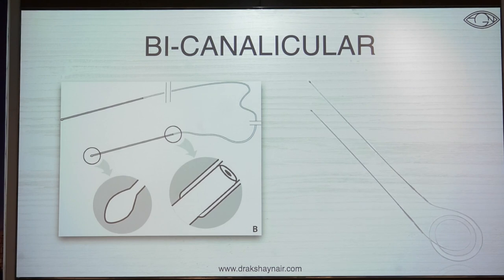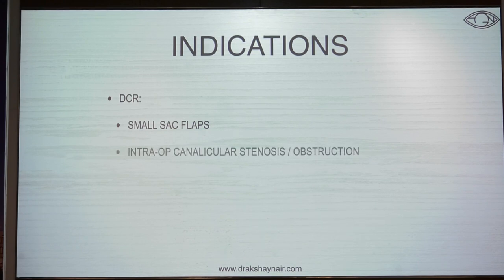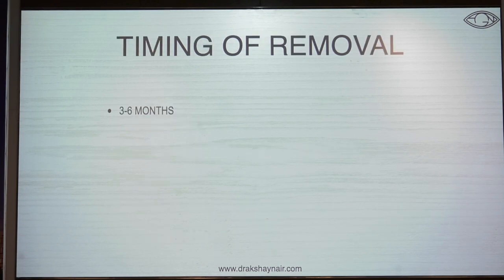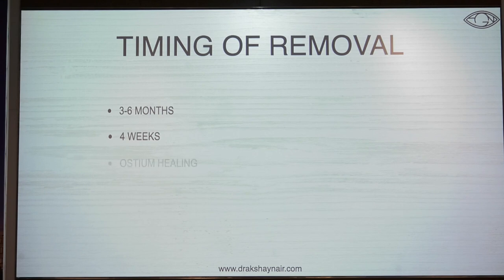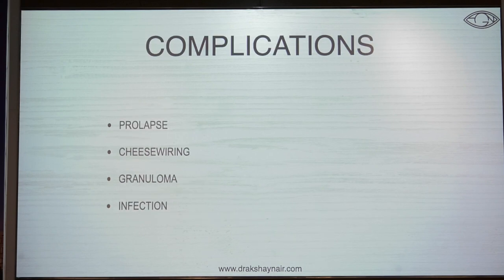By far the most commonly used stent is the bicanalicular stent, available in 20, 23, 25, and 27 gauge, with either straight or olive tips. Indications include DCR with small flaps, intraoperatively diagnosed canalicular stenosis or obstruction, repeat DCR, paediatric cases, or prolonged surgical duration. We used to keep stents in for 3 to 6 months, but current advice is to remove them at 4 weeks, as beyond that the ostium no longer contracts. You may be justified in keeping it longer for punctal or canalicular disorders, but the risk of biofilm and subsequent infection remains. Complications include prolapse, cheese-wiring, granuloma, and infection.